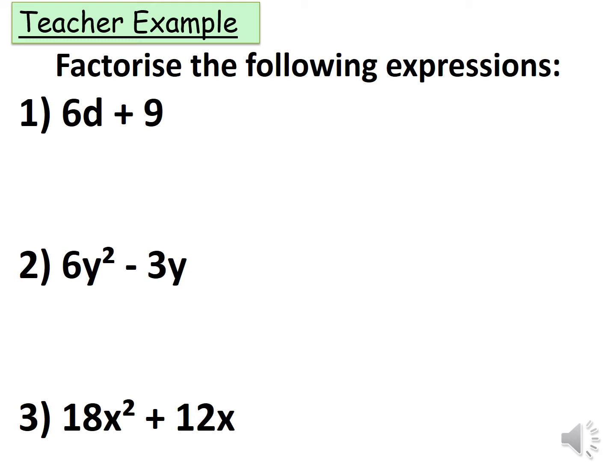First thing we need to do is find out what the highest common factor of 6 and 9 is. The highest common factor of 6 and 9 is 3.